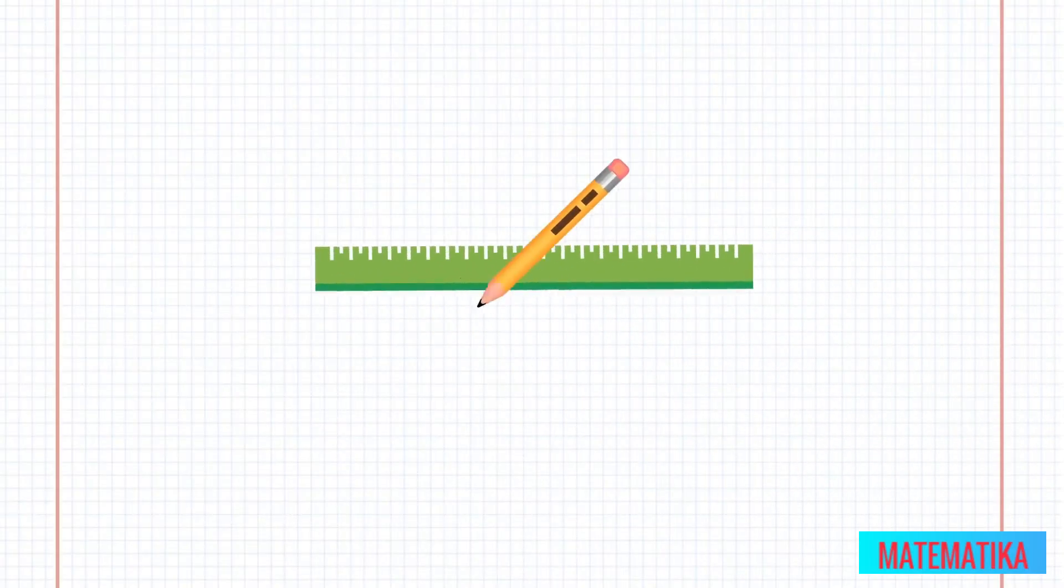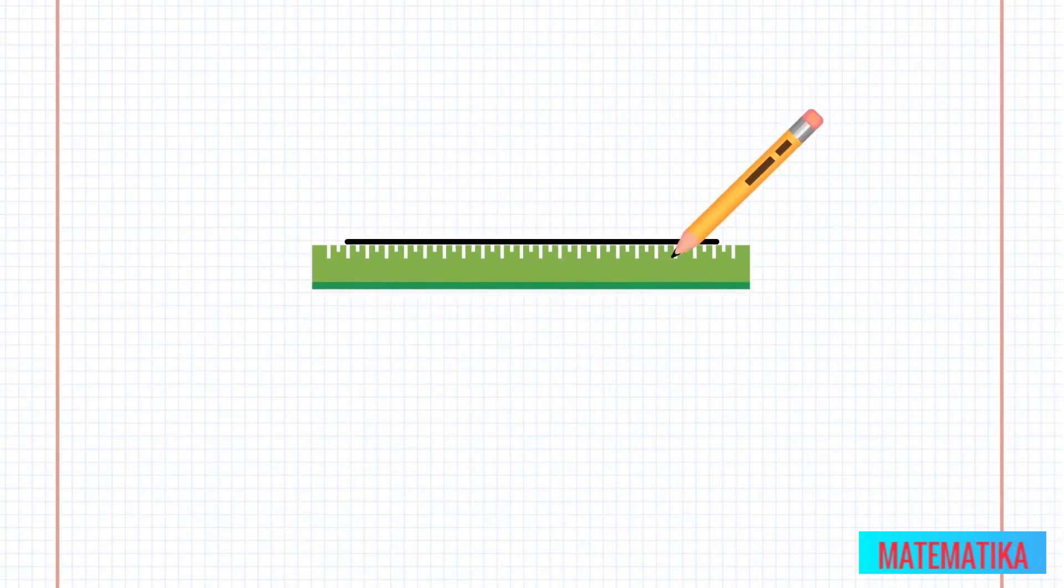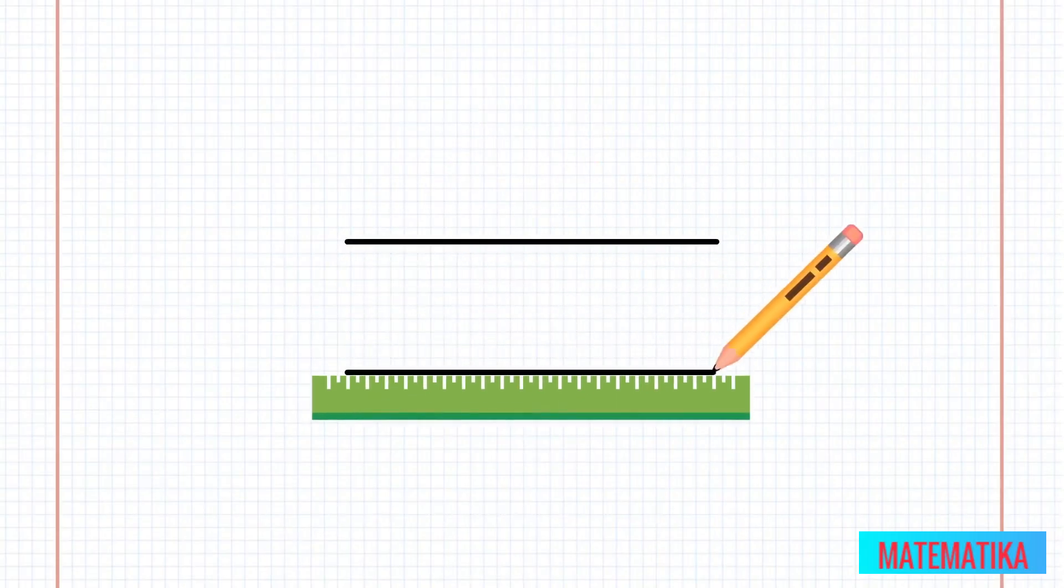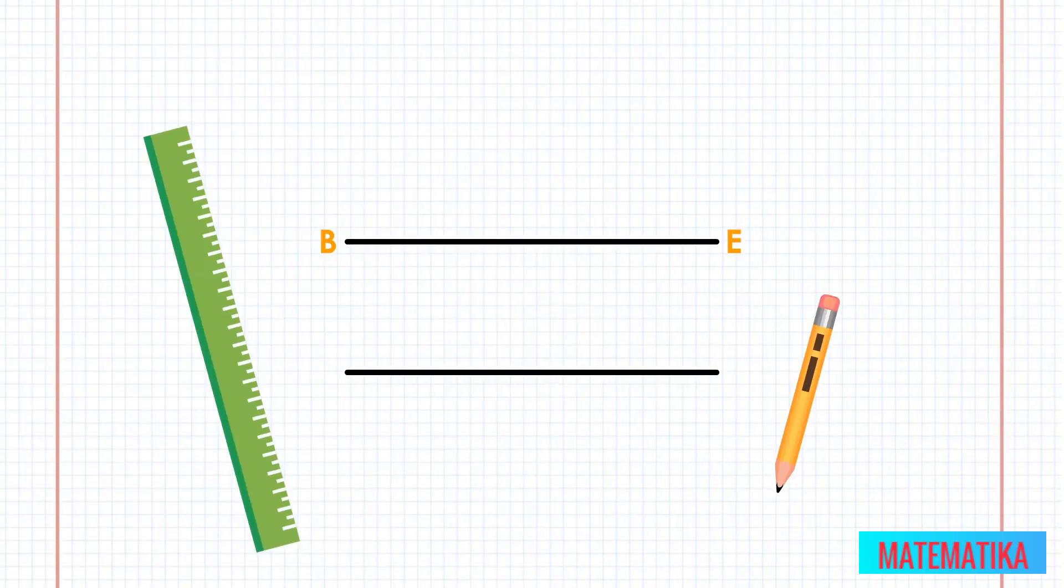Let's construct a transversal to see how they interact with parallel lines. Use a straight edge and pencil to draw parallel lines BE and AR so that BE is horizontal and at the top, with AR horizontal and at the bottom.